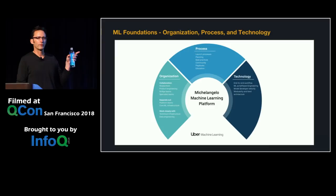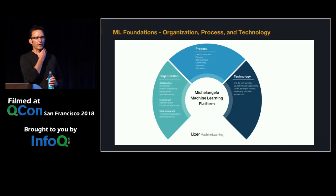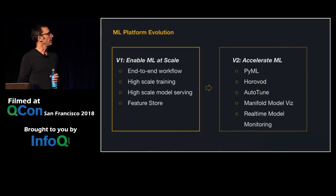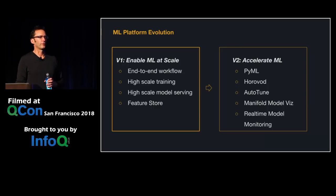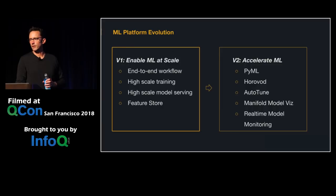We recently published a blog post covering organizational and process aspects of ML at Uber, which have been quite important in making it work well at both system and organizational scale. V1 of ML at Uber was really just to enable people to do it, which has been quite successful and powerful but wasn't always the easiest. V2 is more about improving developer productivity and experience, and increasing the velocity of modeling and deployment work to facilitate innovation.